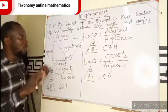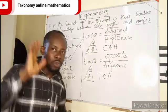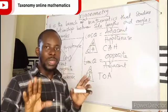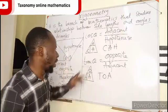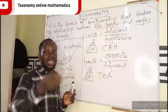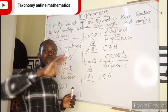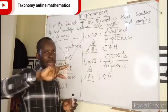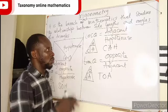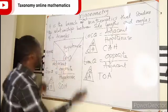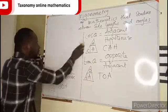All we need under this is SOH CAH TOA as the ratio or the function. When we go further, we talk about the reciprocal. When we get into that, then we easily find what we are looking for.